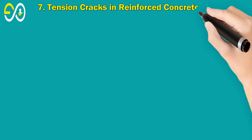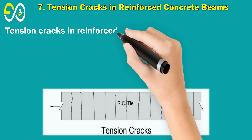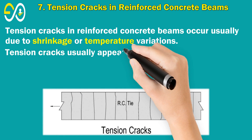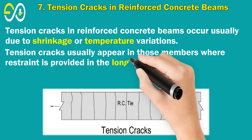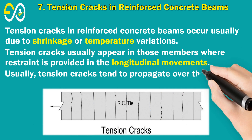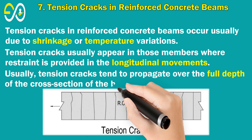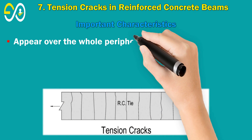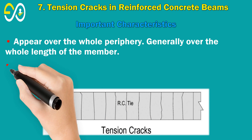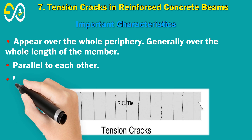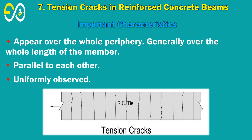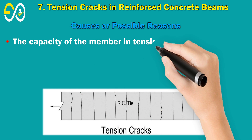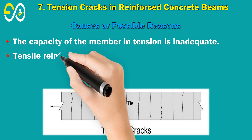7. Tension Cracks in Reinforced Concrete Beams. Tension cracks occur usually due to shrinkage or temperature variations and appear in those members where restraint is provided in the longitudinal movements. Tension cracks tend to propagate over the full depth of the cross-section of the beam. Important Characteristics: Appear over the whole periphery, generally over the whole length of the member; parallel to each other; uniformly observed. Causes: The capacity of the member in tension is inadequate; tensile reinforcement is insufficient.